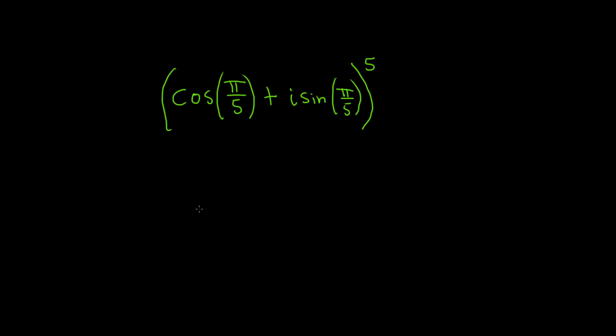In this problem we have a complex number and it's being raised to the fifth power. To work this out we're going to use something called De Moivre's theorem, which basically says when you have something like this all you do is take the 5 and multiply it by the angles.